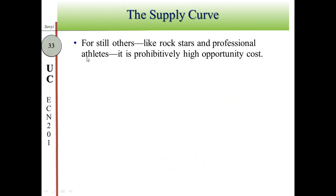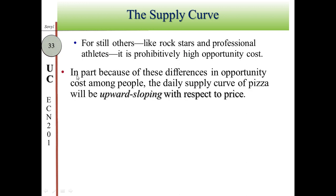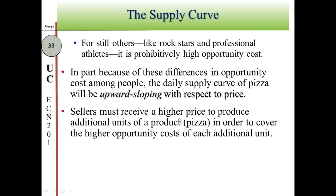For someone like a rockstar or professional, the opportunity cost of selling pizza is prohibitively high — they would say no. Because of these differences in opportunity cost among people, the daily supply curve for pizza is upward sloping with respect to price. When price goes up, suppliers produce more and supply more. When price goes down, suppliers cut production and supply less. Sellers must receive a higher price to produce additional units in order to cover the higher opportunity cost for each additional unit.